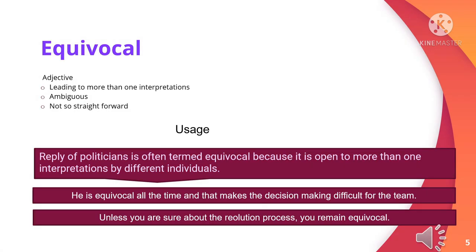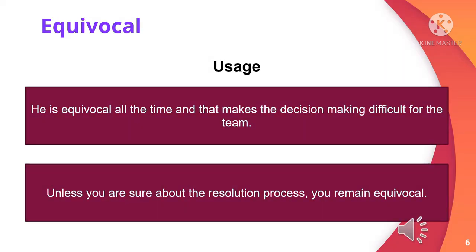The next word is equivocal. It is an adjective and so qualifies nouns. It means leading to more than one interpretation, and also means ambiguous or not so straightforward. Let us see usage: reply of politicians is often termed equivocal. He is equivocal all the time and that makes decision making difficult for the team. Unless you are sure about the resolution process, you remain equivocal.